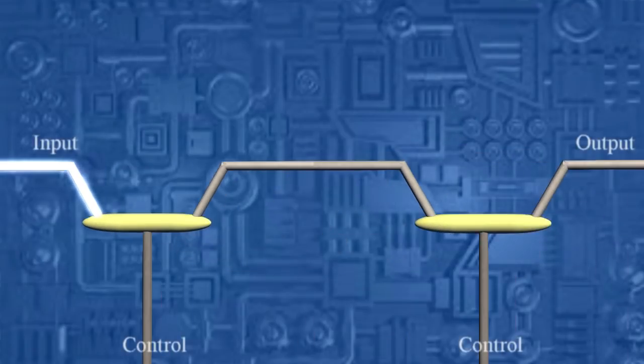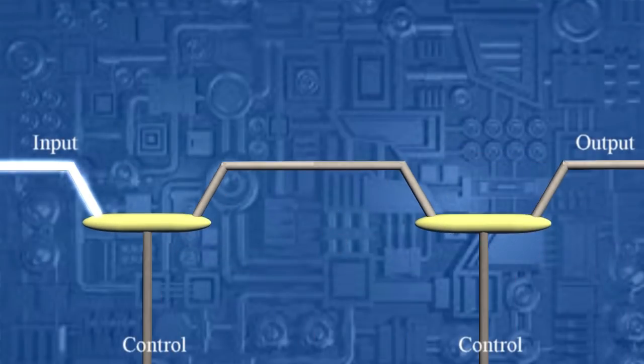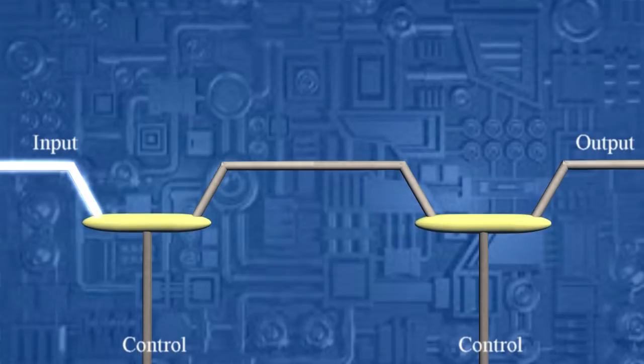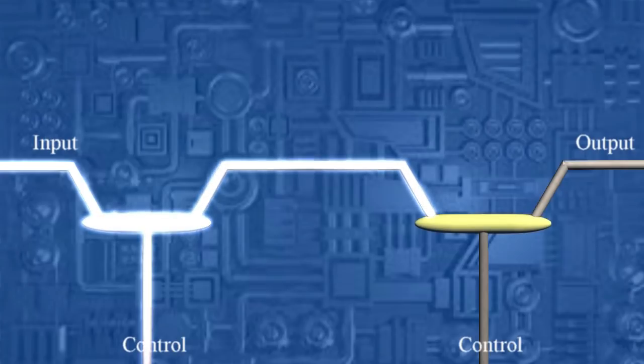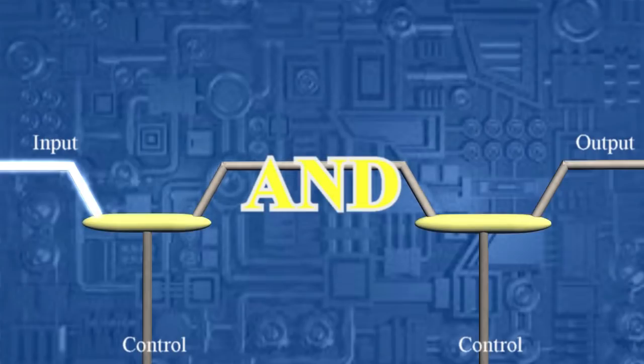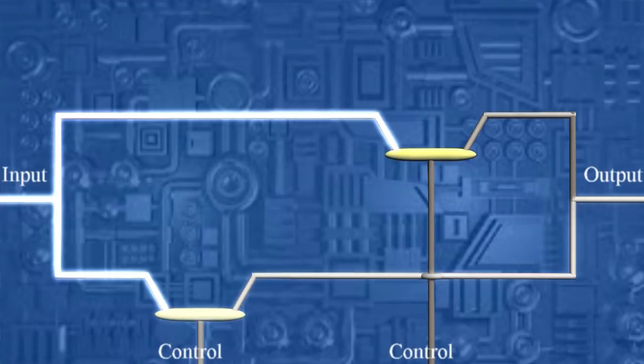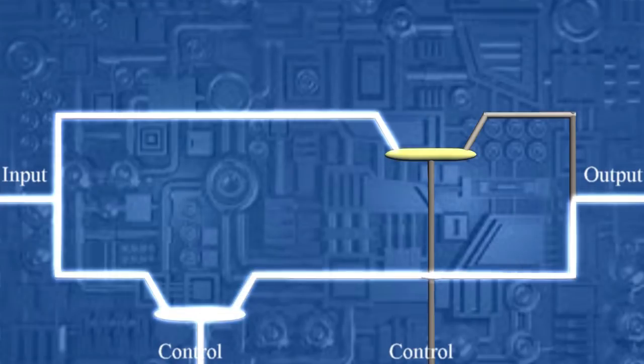If we instead place two transistors on the circuit one after the other, followed by an output wire, we now have a situation where the output is only on if both transistors are receiving an input. If either the first or second transistor doesn't receive an input, the output is off or false. This is called an AND gate. If instead of side by side we place both transistors on two separate paths from the input that rejoin, we now have a path for the current that is on or true only if one or both of the transistors are on, and off or false when both of the transistors are off. This is an OR gate.